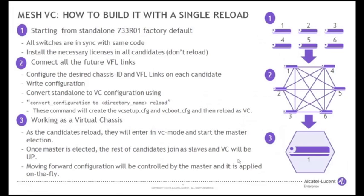To build a VC, all candidate units should have pre-loaded the same software version, which is certified and synchronized. Each unit also requires the VC license to be loaded. Once completed, the VFL links and chassis ID need configuring for each member. The command 'convert configuration to' with the directory name of the file and followed by reload literally converts the existing boot CFG to what is referred to as the VC boot CFG. This command also automatically creates the VC setup config CFG file. At this point, the VFL links should be connected and each unit is reloaded.